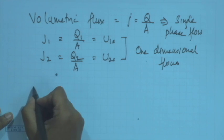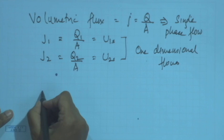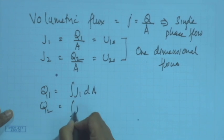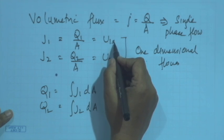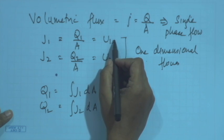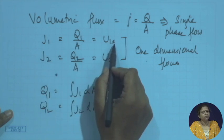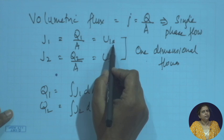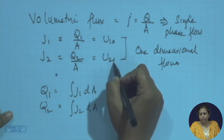Suppose your volumetric flux is varying along the cross section — there is a radial variation of velocity. In that case Q1 is given by the integral of j1 dA and Q2 by integral of j2 dA. Under this condition j1 cannot be equated to the superficial velocity. Since we are dealing with one-dimensional flows the mathematical expressions for volumetric flux and superficial velocity are the same, but when there is a temporal or radial variation they will generally not be the same.